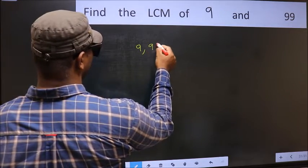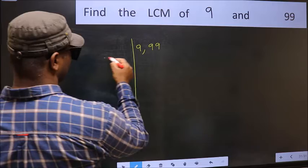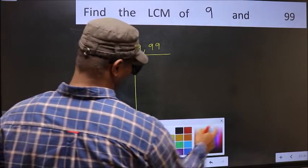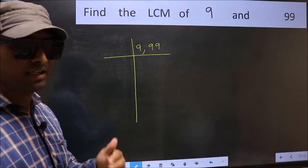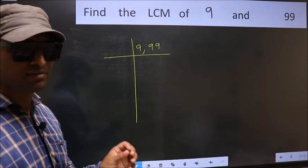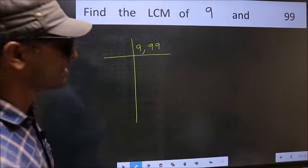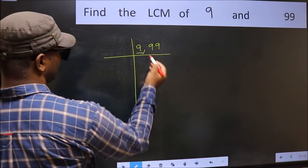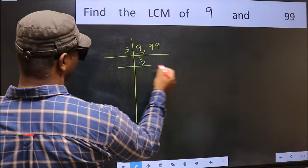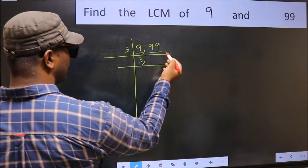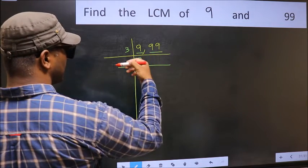9, 99. This is your step 1. Now focus on the first number which is 9. 9 is 3×3. The other number 99 is divisible by 3.